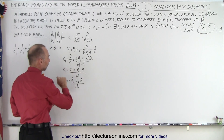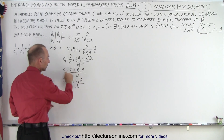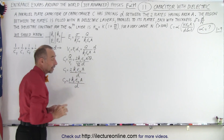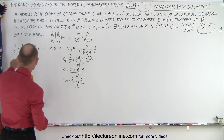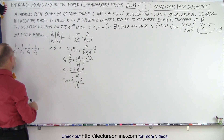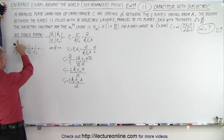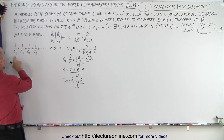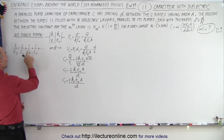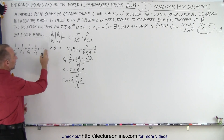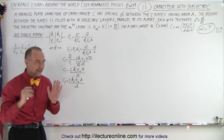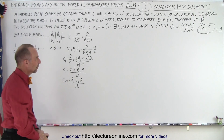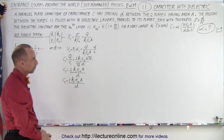That gives the capacitance of the first layer and similarly the second layer. The total capacitance is found using: 1/C_total = 1/C1 + 1/C2 — and so on depending on how many layers there are. That's the core concept we're dealing with.